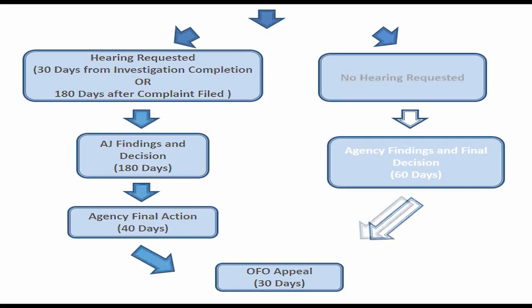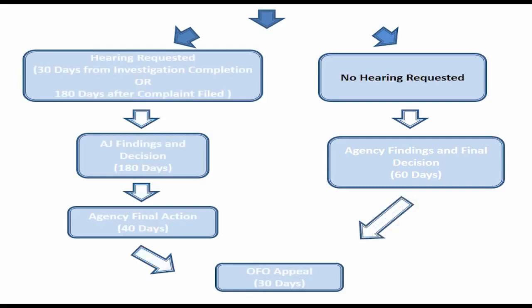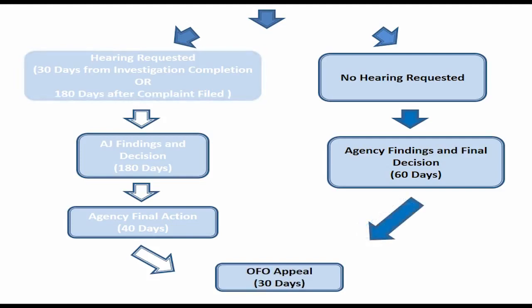On the other hand, if no hearing is requested, the agency has 60 days to make findings and issue a final agency decision. You have 30 days to appeal this decision to OFO, the Office of Federal Operations.